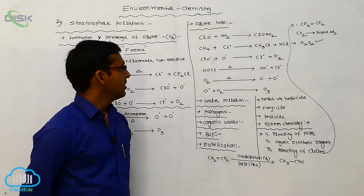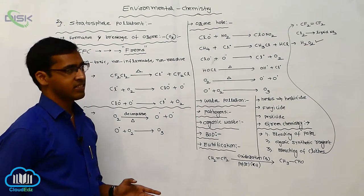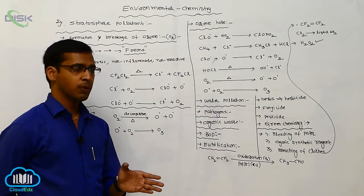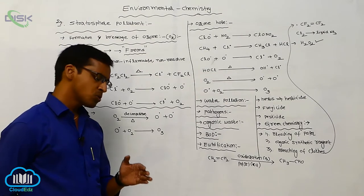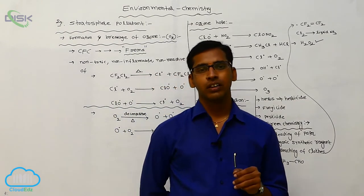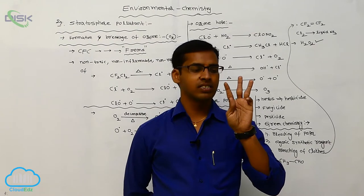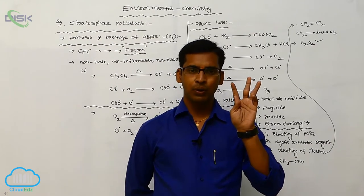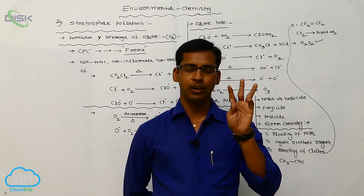So these are the pollutants we have discussed. That is tropospheric pollutant and stratospheric pollutant. So those two are pollutants for air pollution. Here are three significant factors: one is air, water, and soil. Air pollutants include tropospheric pollutant and stratospheric pollutant.